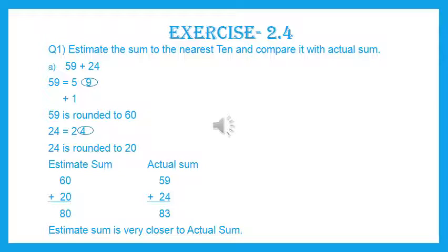Now, if we talk about nearest 100, we need to check the digit at the 10's place. If the digit at 10's place is greater than or equal to 5, we will add 1 to the 100's place. For example, 567 — we check the 10's place, which is 6. So we add 1 to the 100 place: 5 becomes 6, and the last two places become 00. That is, 567 is rounded to 600.